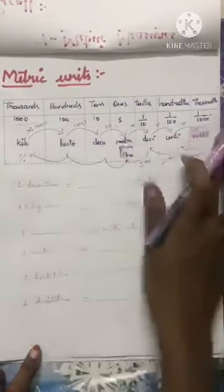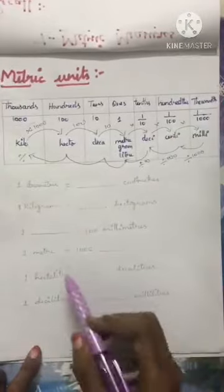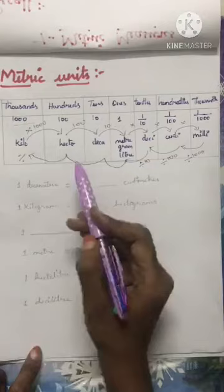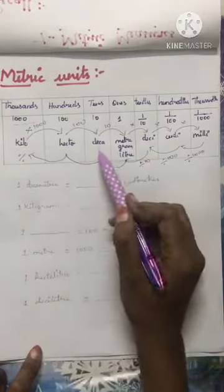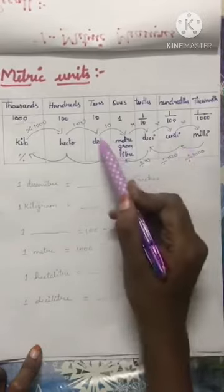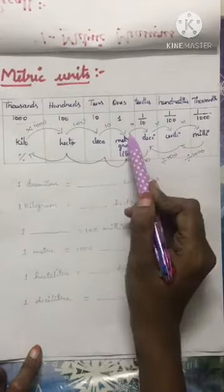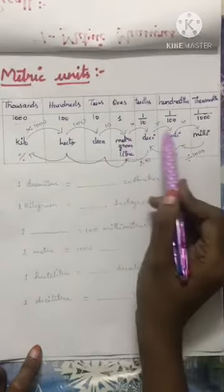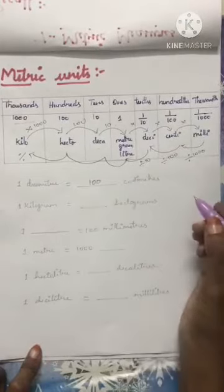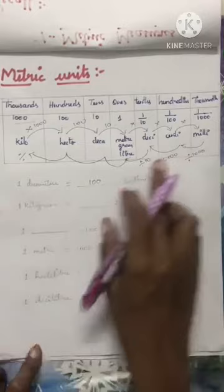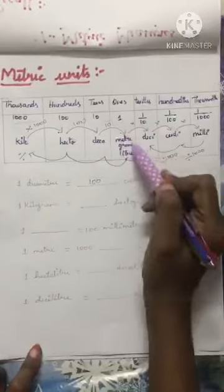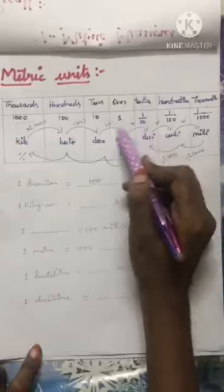One decameter is equal to how many centimeters? From here to get there, we have to multiply with two zeros, so hundred centimeters. One decameter is equal to hundred centimeters because from dec, one zero, one ten is there, and here one ten is there, so when you are multiplying those two you will get hundred.